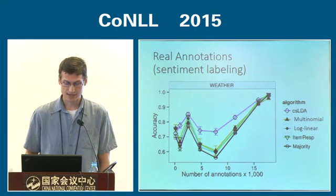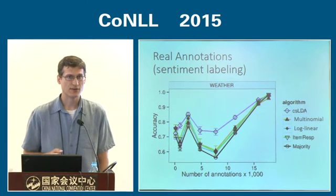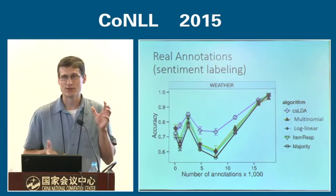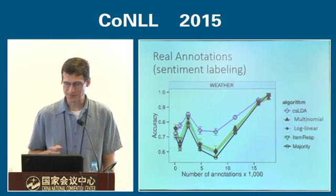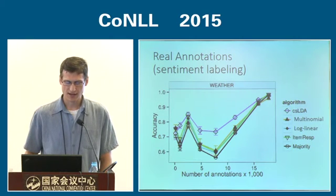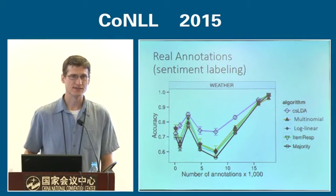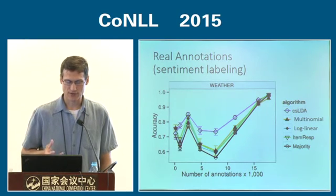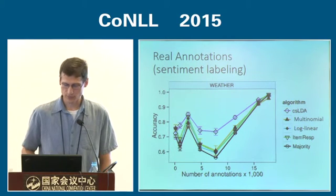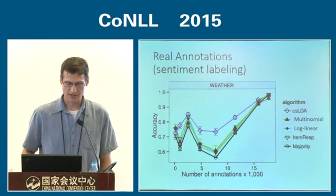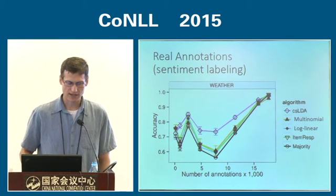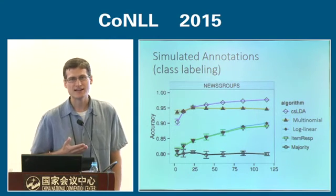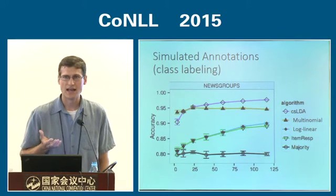CSLDA has a nice advantage over the other approaches. They all eventually get the right answer — with 20 annotations per item — but the bumpiness is due to annotation ordering, which somewhat favors majority vote. CSLDA gets some advantage even under those conditions. We also want to check performance on other datasets for which we don't necessarily have multiple annotator judgments.